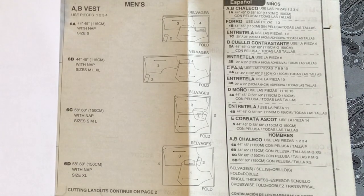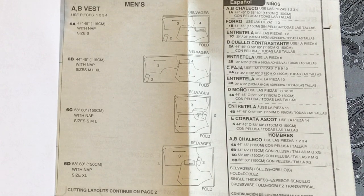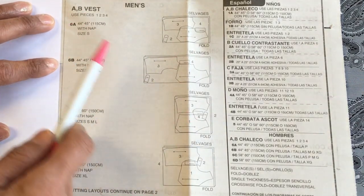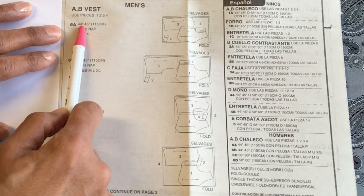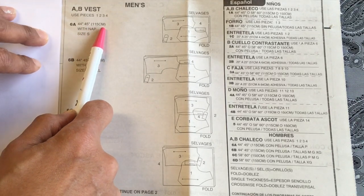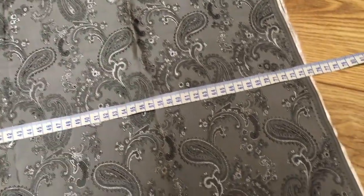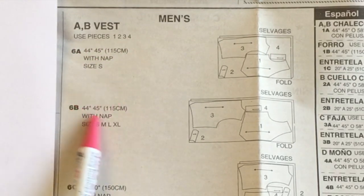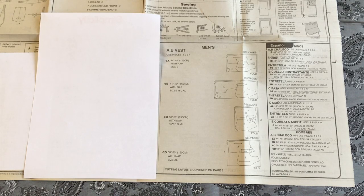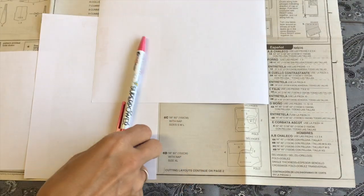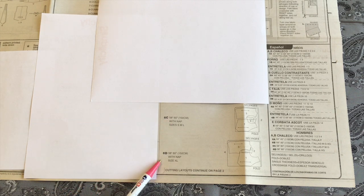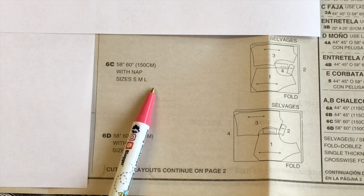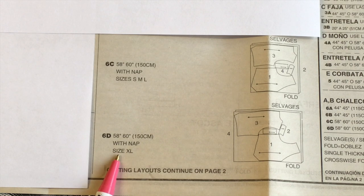Now remember we talked about in the first part the width of the fabric. So you've possibly been shopping. What you need to decide is which of these sections we need to worry about for the vest. So we've got 6A, 44 inches or 45, that's 115 cm wide fabric. Well the fabric I have is 150 cm wide. So the 115 cm wide fabric sections are no good to me, they're irrelevant. So now we look at 6C and 6D. 6C is with nap and 6D is with nap. That's for sizes small medium and large, now I've got to make medium.